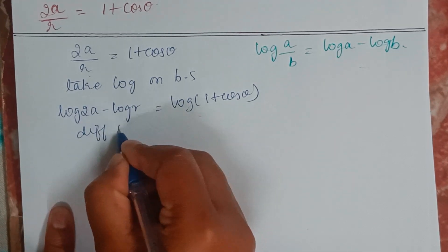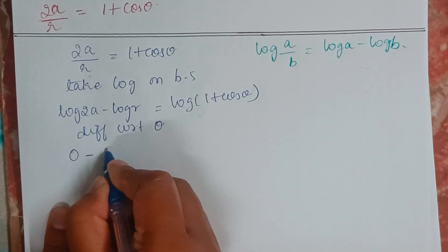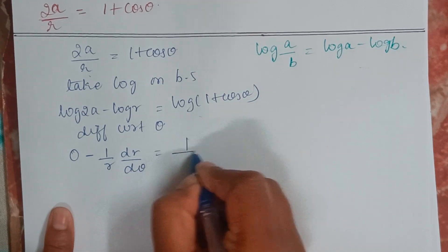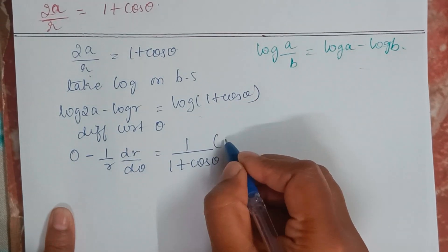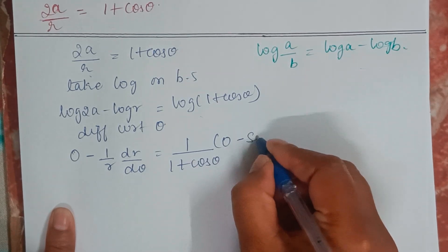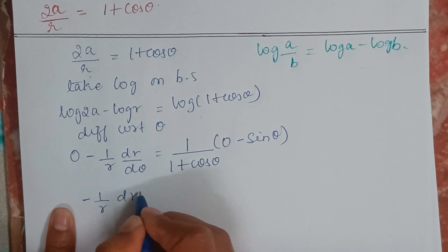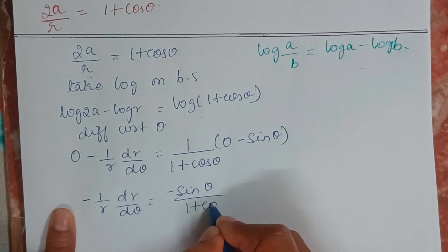So we will differentiate with respect to theta here. So this becomes 0 minus 1 by R dr by d theta equals 1 divided by 1 plus cos theta into 0 minus sin theta. So minus 1 by R dr by d theta equals minus sin theta divided by 1 plus cos theta.